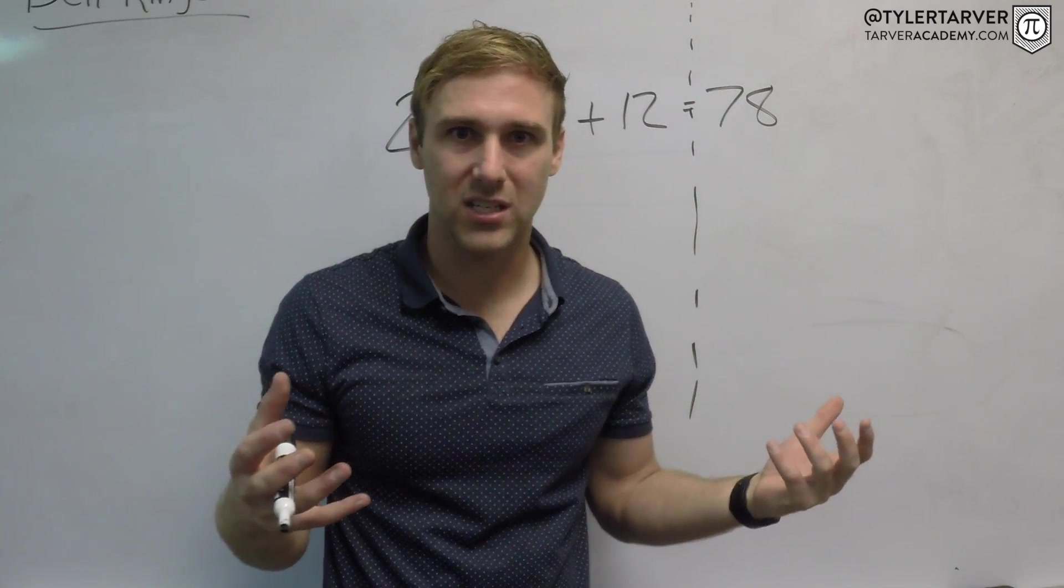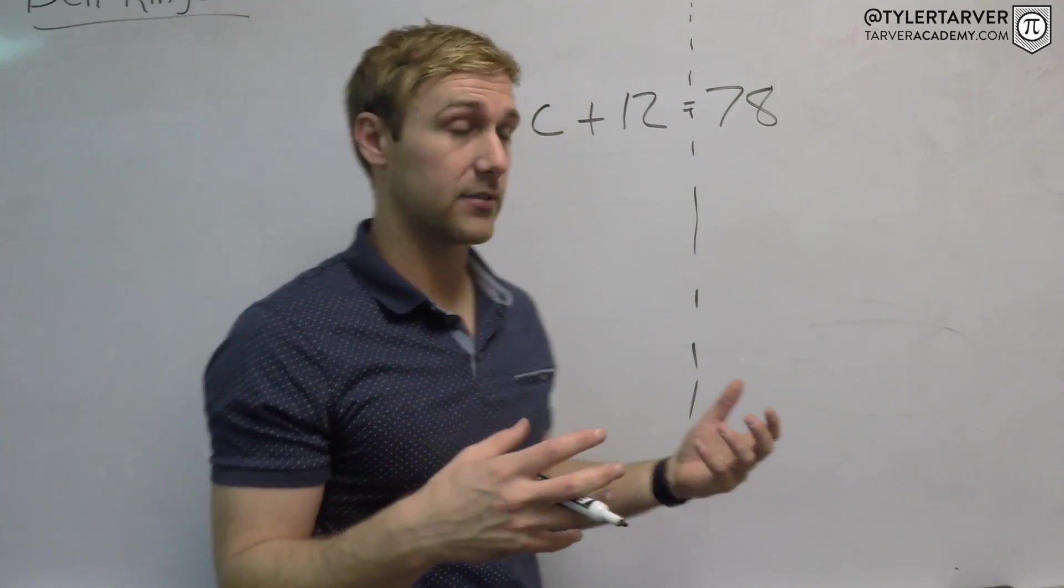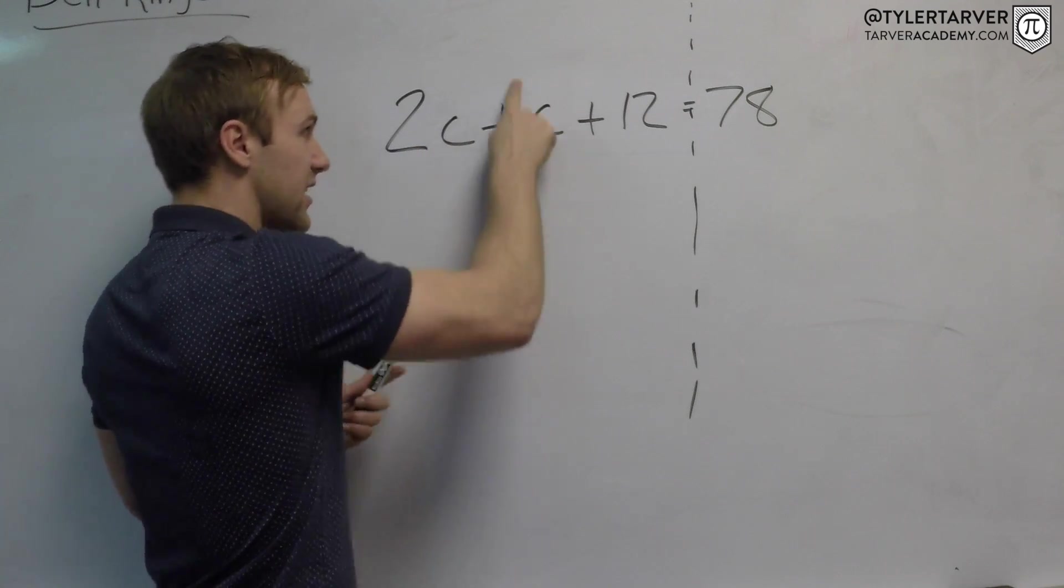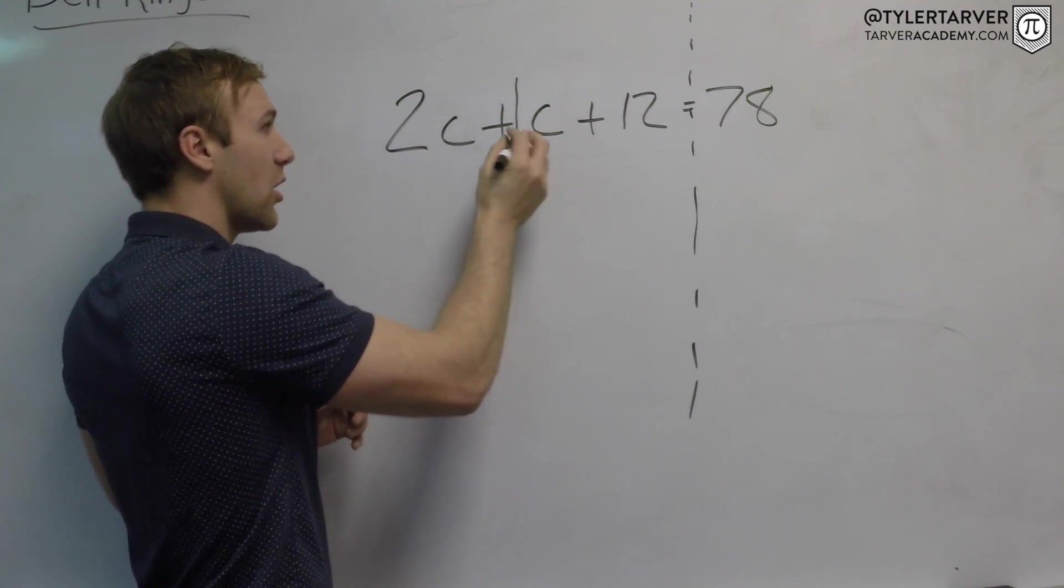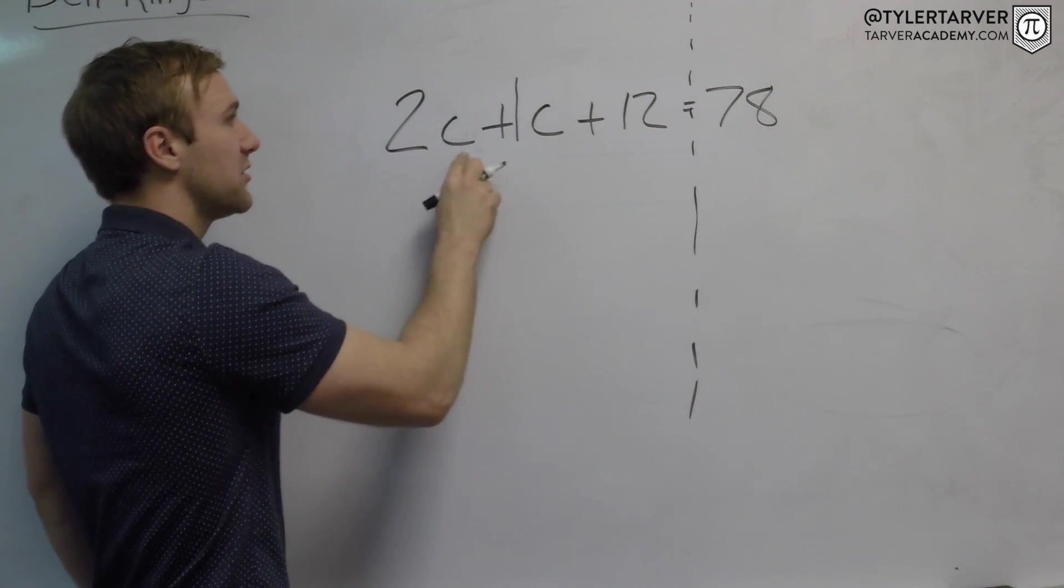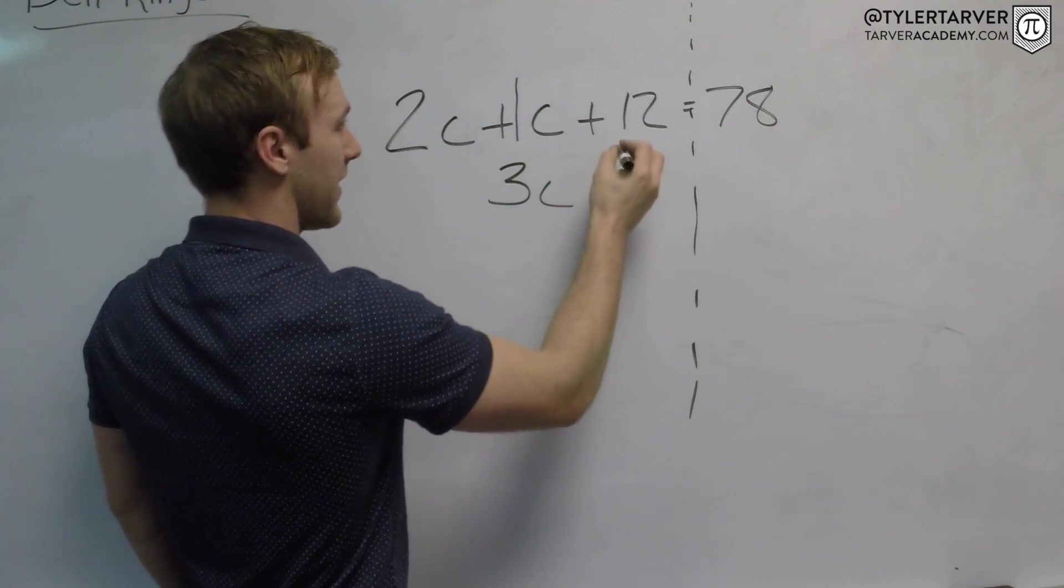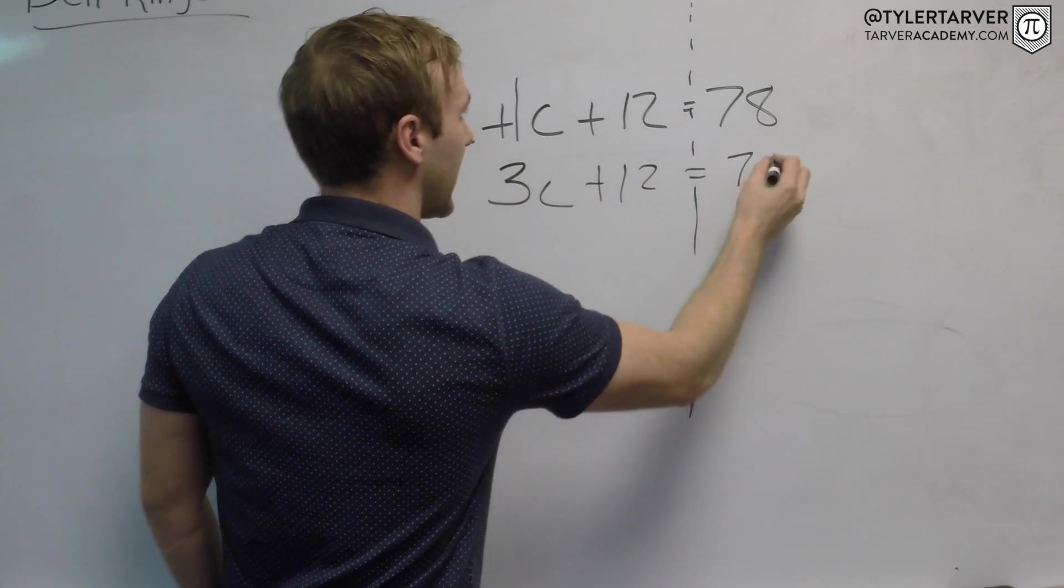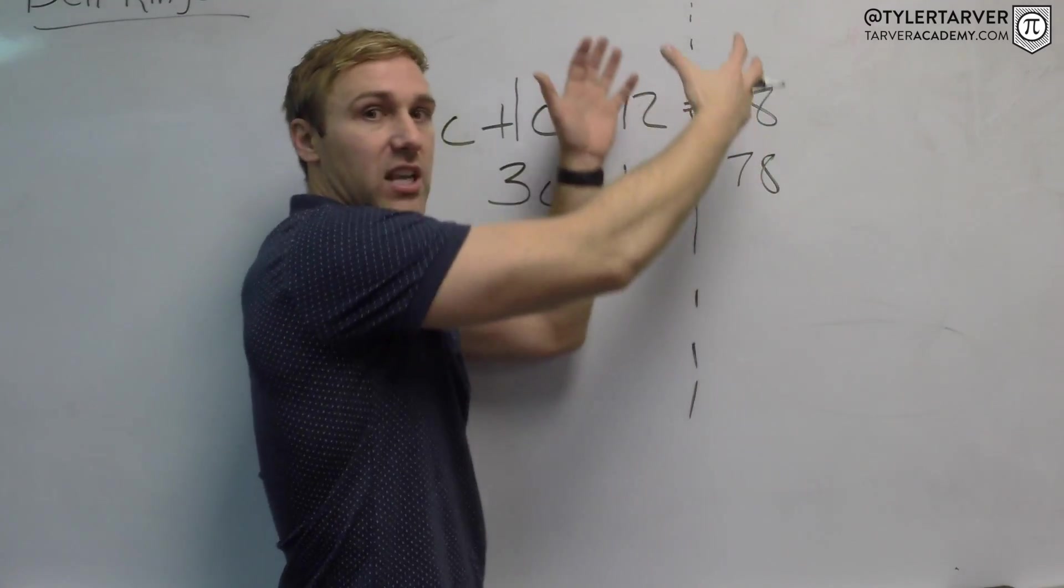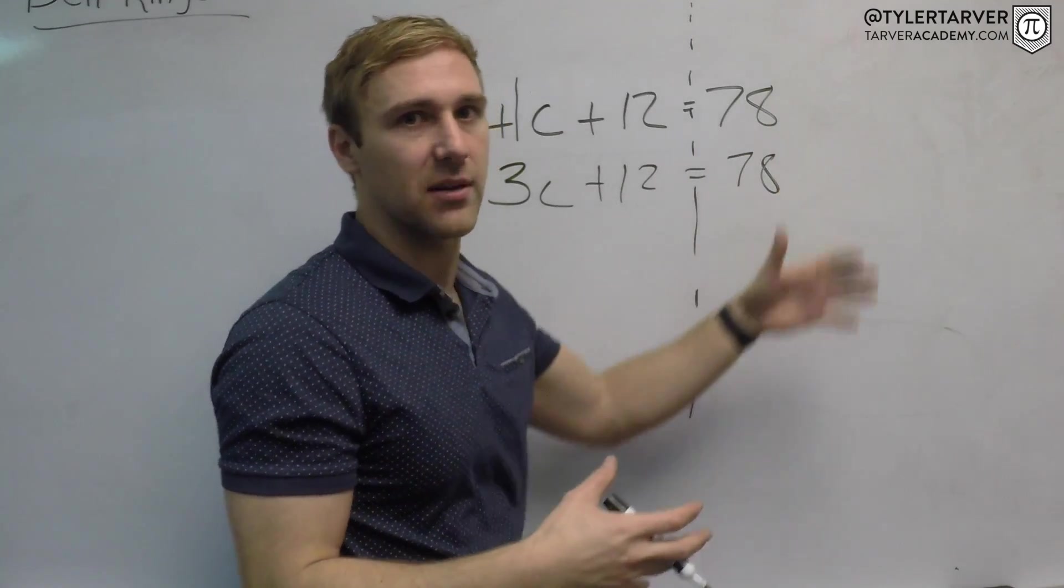Alright, so whenever you do this, every time there's just a variable, you always know one times that variable is that variable. We just don't write it because that looks silly. So two C plus one C is three C, and then I just bring everything else down. A very important thing in working multi-step equations: bring everything down, keep it in rows or columns. It's gonna make it so much easier, you won't forget or leave something behind.